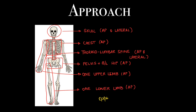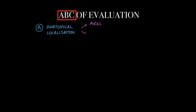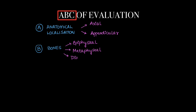In case of suspected epiphyseal dysplasia, both upper limbs and both lower limbs are supposed to be taken. Once X-rays are obtained, we will move on with evaluation. We follow ABC of evaluation. A is anatomical location, where we see whether the location of pathology is in the axial or appendicular skeleton. Next, we see the bones and where in the bone the pathology is — epiphyseal, metaphyseal, or diaphyseal, or a mixed location.